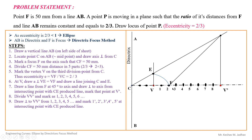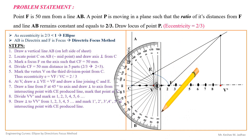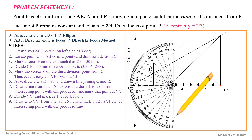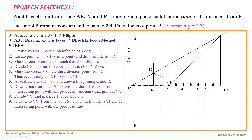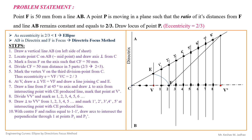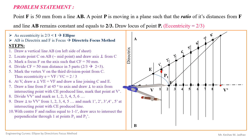The vertical lines from the division points will intersect the line CE. Name these intersection points as 1', 2', 3', 4', and so on. To get points on the ellipse, using a compass take a distance equal to 1–1' and with center at focus F, draw arcs on both sides of the axis — upper side and lower side — to get points P1 and P1'.